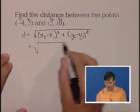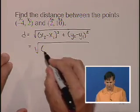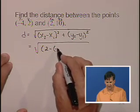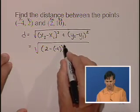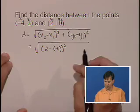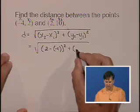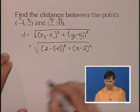So the formula is going to give us the square root of 2 minus negative 4 quantity squared plus 10 minus 2 quantity squared.